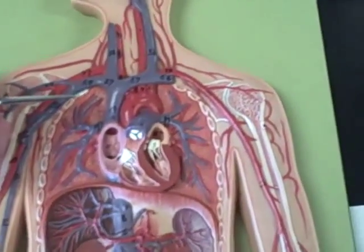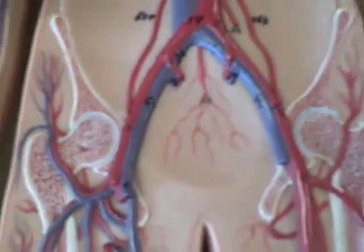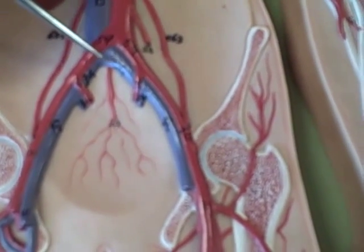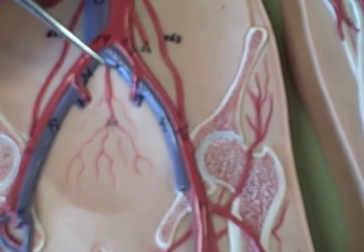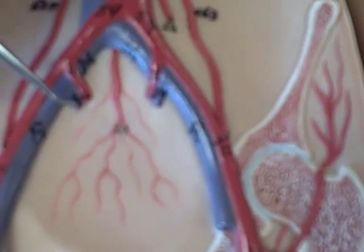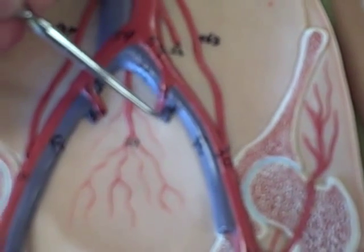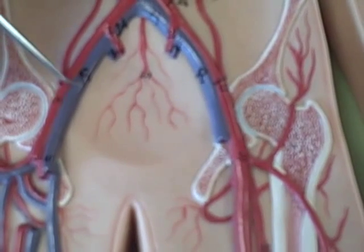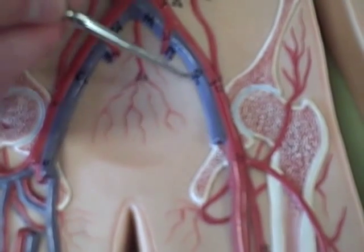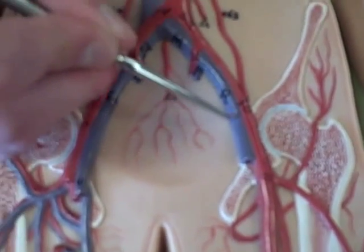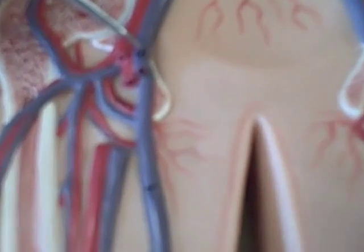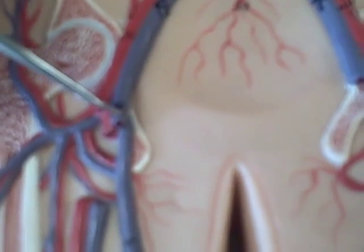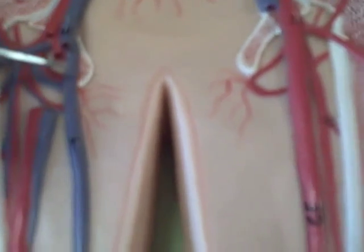Now we have the right common iliac vein, the left common iliac vein, the right internal iliac vein and the left internal iliac vein, the right external iliac vein, the left external iliac vein, the femoral vein — it stops right here, which it doesn't actually stop, it's a cutaway — and then you have the great saphenous vein.